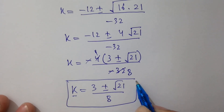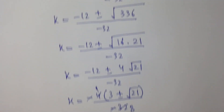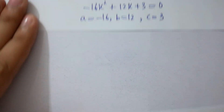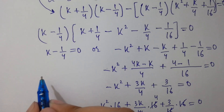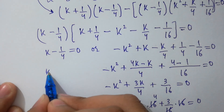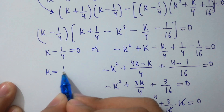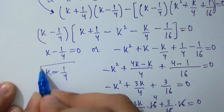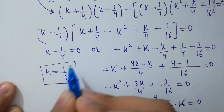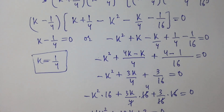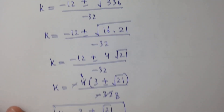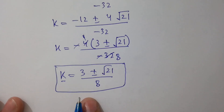And since k minus 1 over 4 equals 0, we also have k equal to 1 over 4. So we have two answers: k equals 1 over 4, and k equals 3 plus or minus square root of 21, over 8.